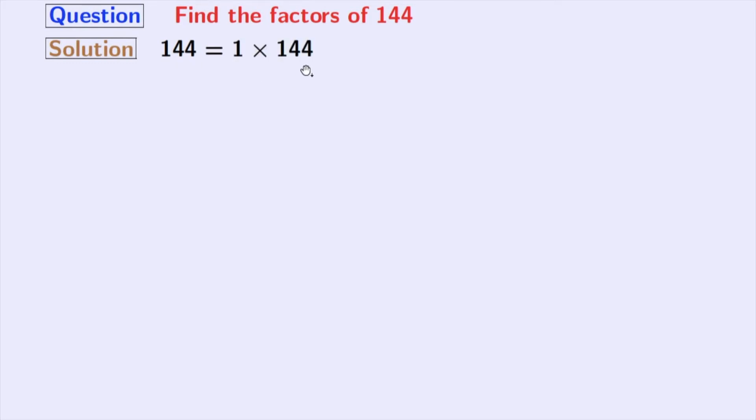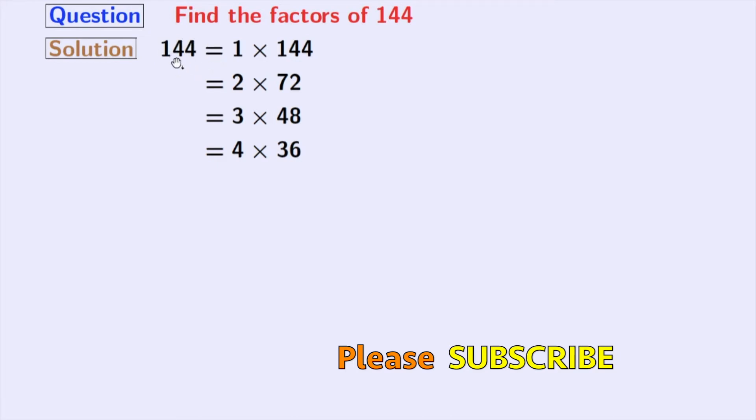Next, we can express this as 2 times 72. With 3, we can express 144 as 3 times 48. Next comes 4 and we have 4 times 36 is equal to 144. Next, number 5 does not divide 144, so we will move to 6. And 6 times 24 gives us 144.